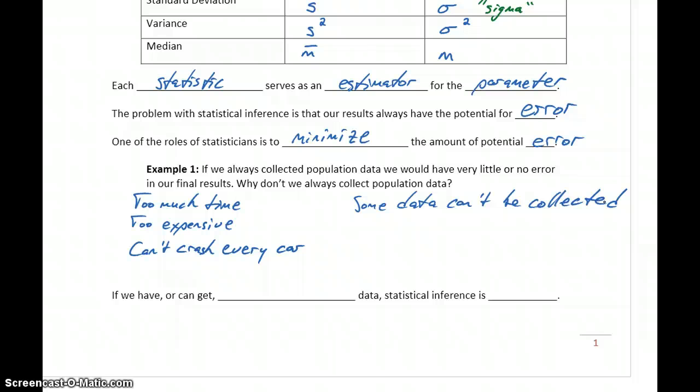Those are some reasons why we rely on sample data rather than collecting population data. But it's important to keep in mind if we have or if we are able to get population data, then statistical inference is not needed. If we have all of the information that we need to consider, we don't have to make estimates or draw inferences.